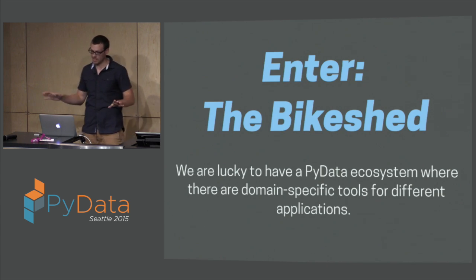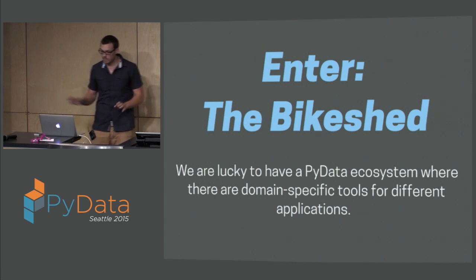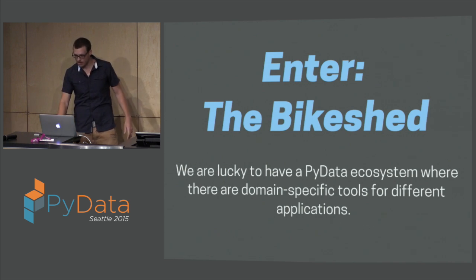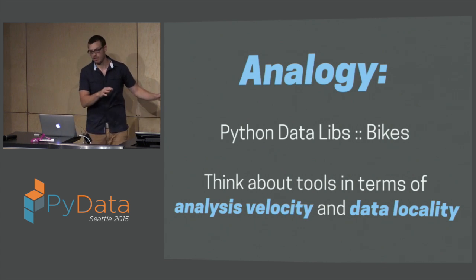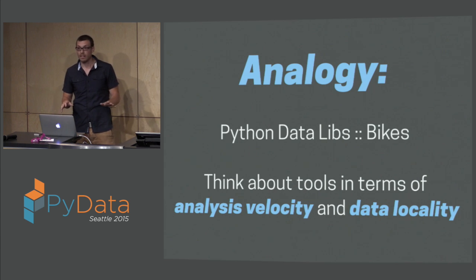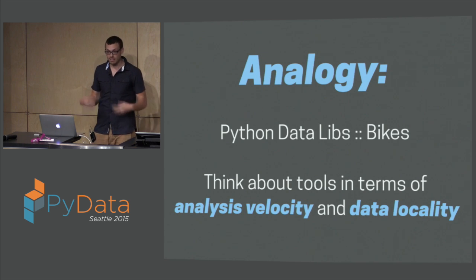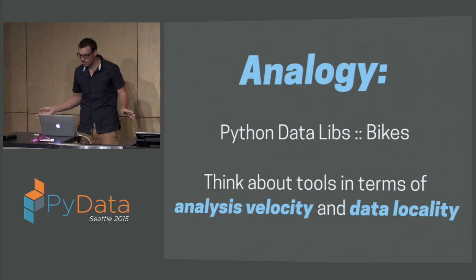So don't enter the bike shed. We are very lucky to have a PyData ecosystem with domain- and application-specific tools, and we have a very broad range of these. I'm going to make the analogy that Python data libraries are like bikes. We can think about these tools in terms of analysis velocity and data locality — how fast is my tool at doing a thing, and where is the data it's operating on? Is it in memory, on disk, or distributed somewhere? All these libraries address that in different ways.